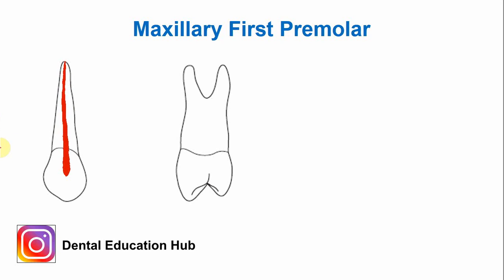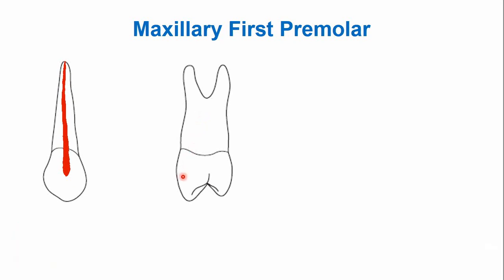This is the outline of the buccolingual section of the maxillary first premolar. This tooth has two well-developed cusps. The buccal cusp is slightly larger compared to the palatal or lingual cusp. There are two roots: this is the buccal root, and this is the lingual or palatal root, with a large root trunk.